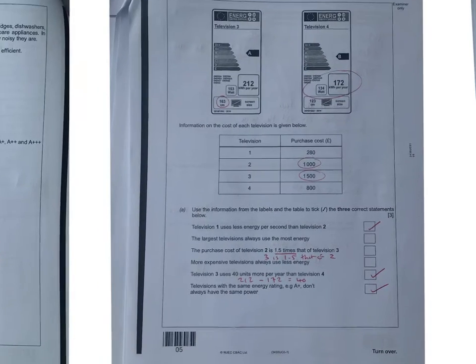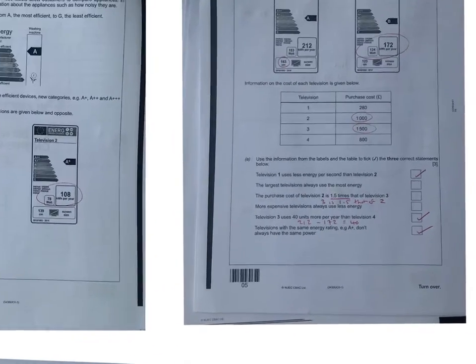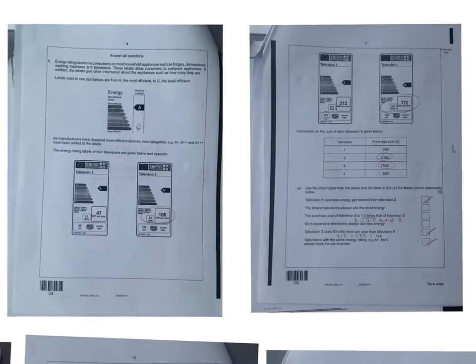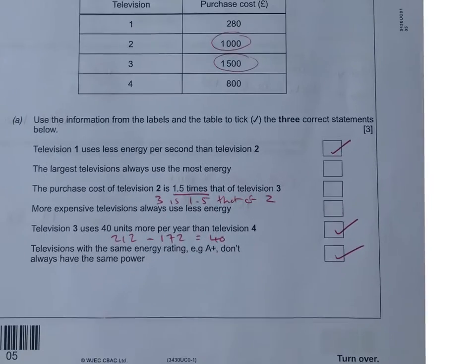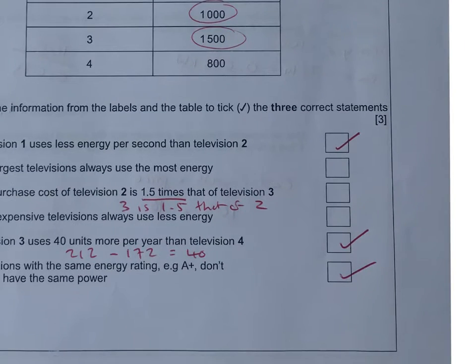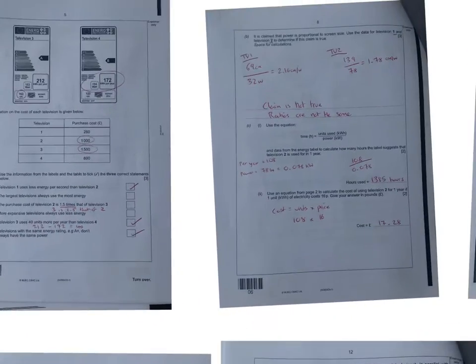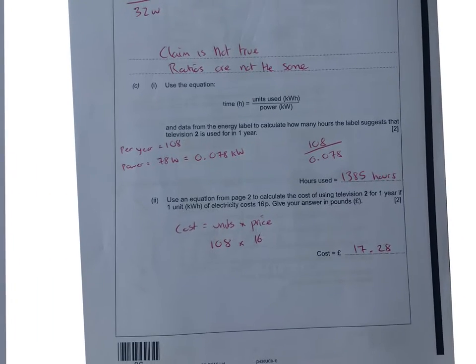Televisions with the same energy rating, for example A+ or A*, don't always have the same power. You can see that the powers are different. So the statement's true. A lot of work involved for three marks there. The key learning from this is don't always spend hours on a three mark question. Maybe come back to this if you're getting caught up with the numeracy.